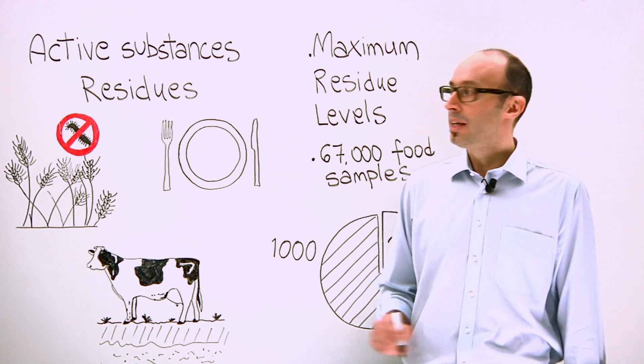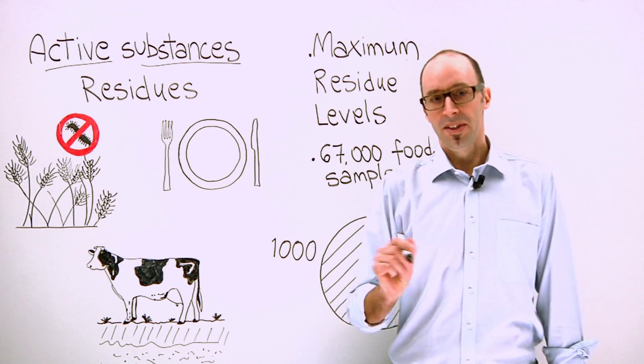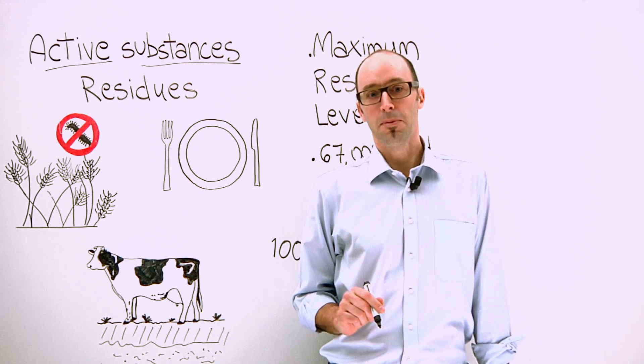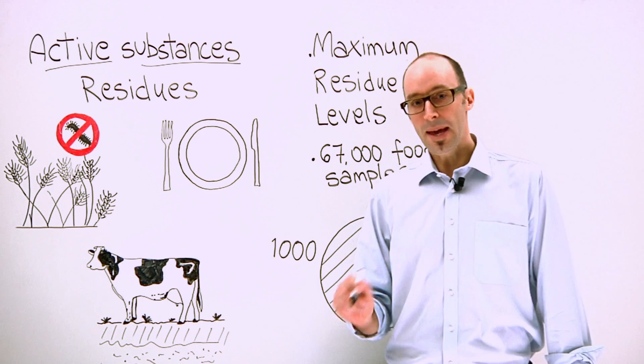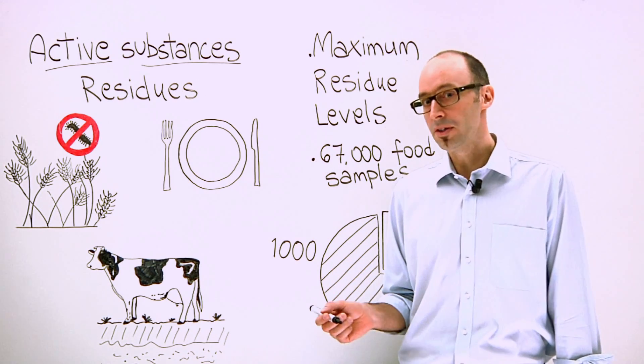All pesticides contain active substances. These are the essential ingredients that enable them to function. This can be a chemical or it can be a microorganism, such as a bacterium or a virus.